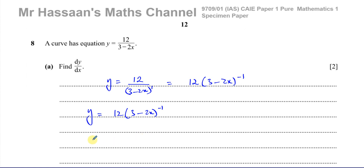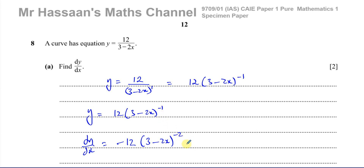The chain rule applies when the main function is something raised to a power — here it's 3 minus 2x to the power of minus 1. To differentiate, we multiply by the power: minus 1 times 12 gives minus 12. Then we subtract 1 from the power, making it negative 2. Finally, we multiply by the differential of what's inside the function: the derivative of 3 minus 2x is negative 2.